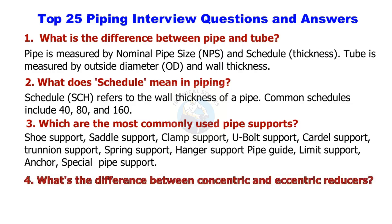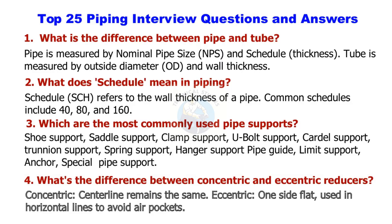What's the difference between concentric and eccentric reducers? Concentric: the centerline remains the same. Eccentric: one side is flat, used in horizontal lines to avoid air pockets.